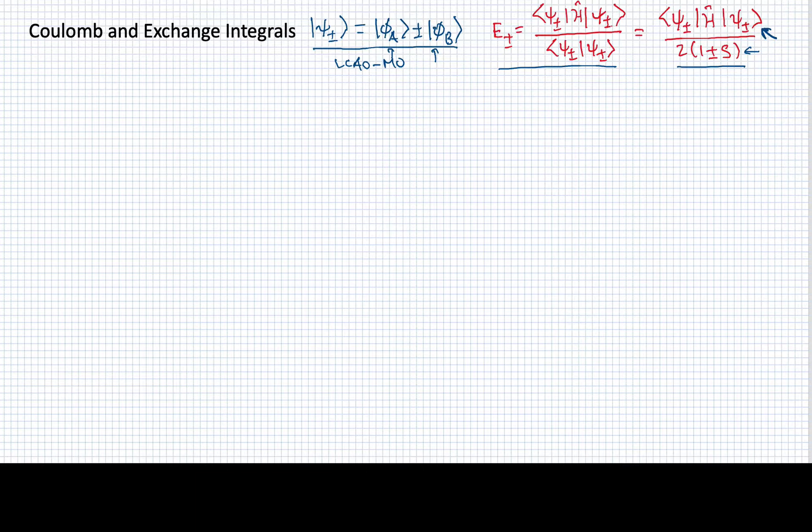The first thing I want to do is show what terms we have to include. If I have psi plus or minus H psi, we're going to have terms that look like this. We'll have phi A plus or minus phi B, H phi A plus or minus phi B. We're going to end up with four different terms with different combinations of phi A and phi B on either side of the Hamiltonian.